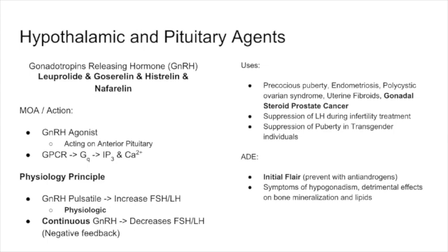The physiology principle is similar to how we talked about parathyroid-releasing hormone. When GnRH is pulsatile, this causes an increase in FSH and LH — hormones coming from our anterior pituitary. This is physiologic. However, if we give continuous GnRH, we actually reduce the amount of FSH and LH and provide negative feedback. That's how these drugs are used — primarily as blocking agents, even though they're agonists.